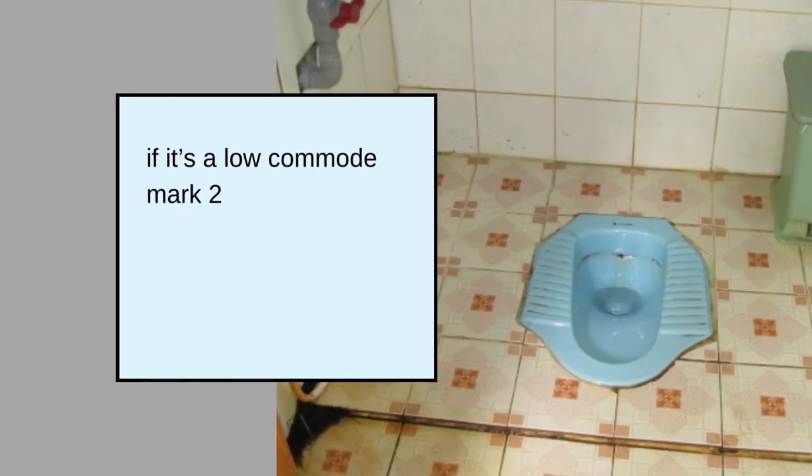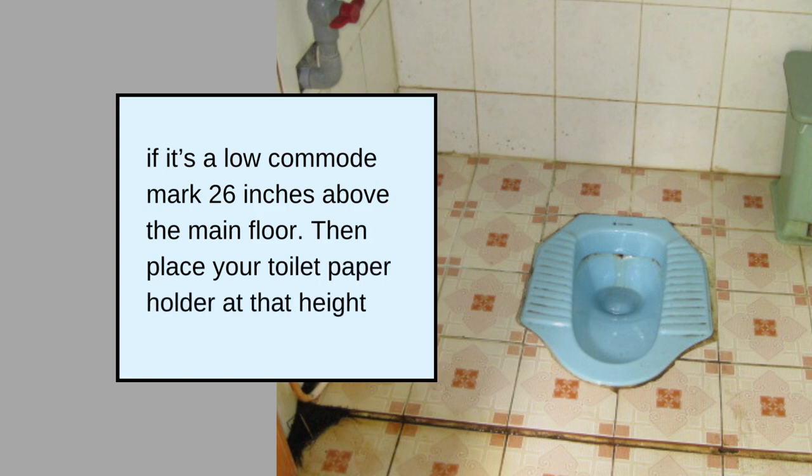If it's a low commode, mark 26 inches above the main floor. Then place your toilet paper holder at that height.